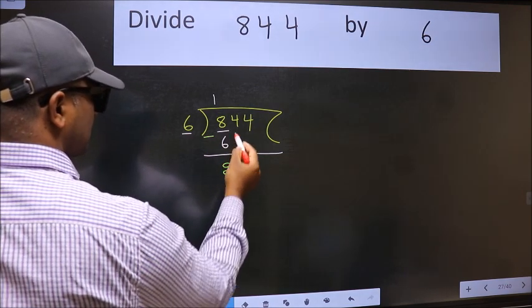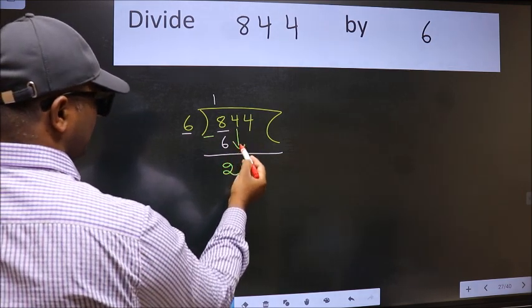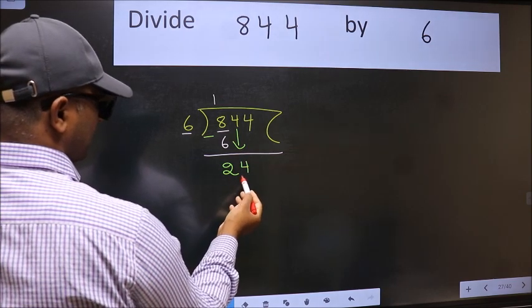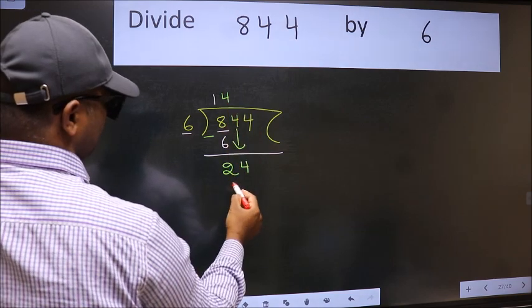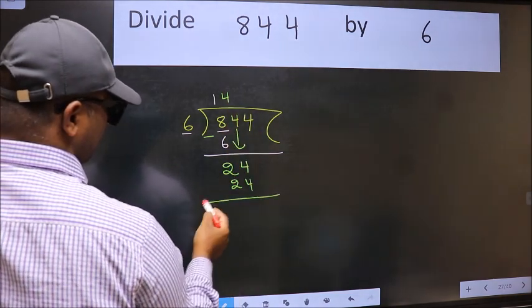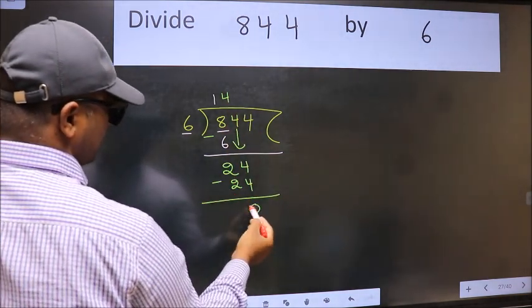After this, bring down the beside number. So 4 down. 24. When do we get 24 in 6 table? 6×4 is 24. Now we subtract. We get 0.